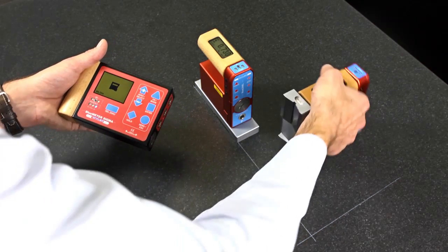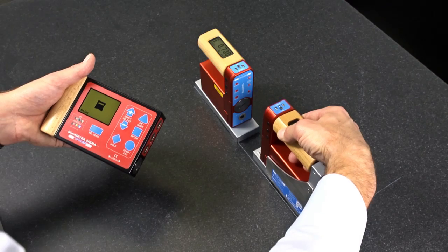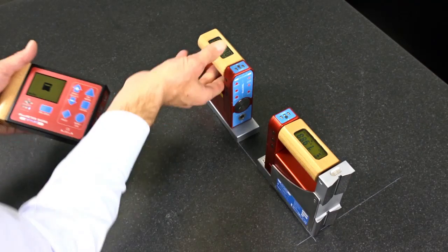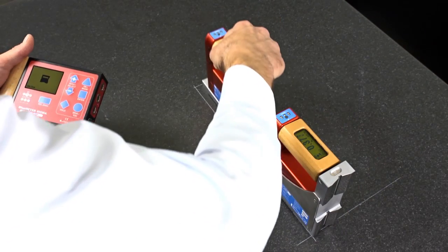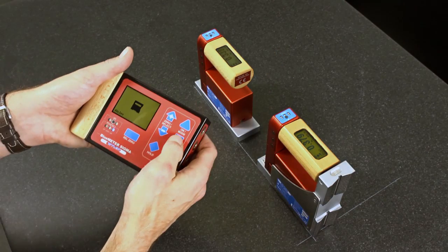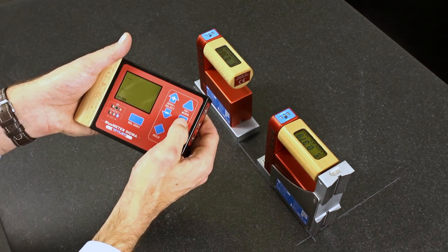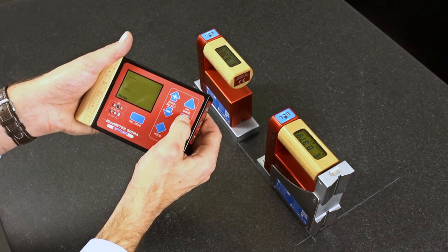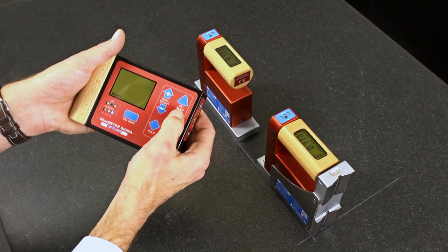Now I'm positioning the measuring instrument on exactly the same spot, but turned by 180 degrees in the horizontal. And I'm reading out the second value with the Enter key. My reversal measurement is now completed.